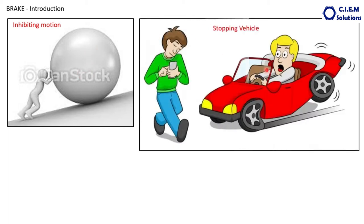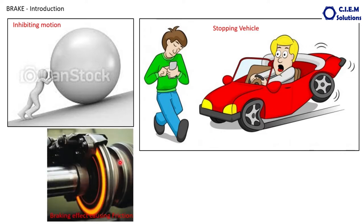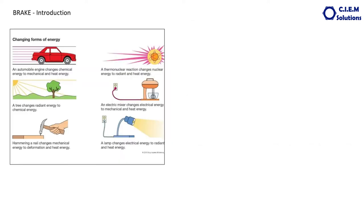If you want to slow down or stop the vehicle depending on the driving conditions and road conditions, the brake is applied. When you apply the brake, friction is generated. Scientifically speaking, energy can neither be created nor destroyed — it only changes its form from one state to another. For example, in an automobile, the engine changes chemical energy to mechanical energy and heat energy. The chemical energy available in the fuel is converted into thermal energy, and that thermal energy is then converted into mechanical energy.